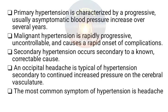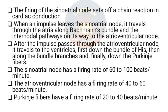Primary hypertension is characterized by a progressive, usually asymptomatic blood pressure increase over several years. Malignant hypertension is rapidly progressive, uncontrollable, and causes a rapid onset of complications. Secondary hypertension occurs secondary to a non-correctable cause. An occipital headache is typical of hypertension due to continued increased pressure on the cerebral vasculature. The most common symptom of hypertension is headache.